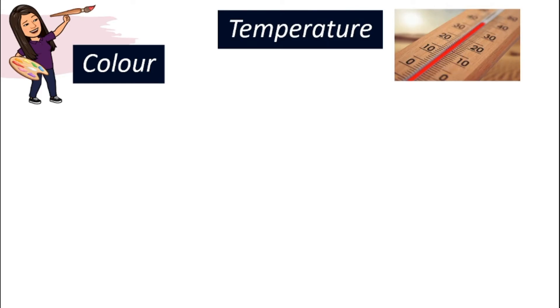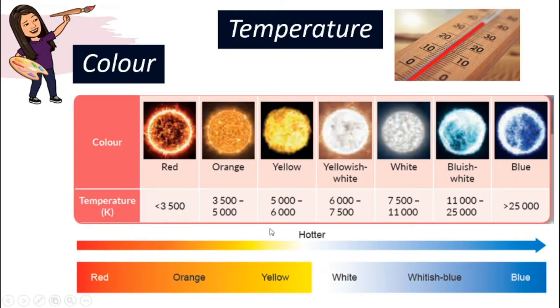The color and the temperature of the star are actually interrelated. As you can see from this table, when the color of a star is towards red, it is actually of lower temperature compared to a star that is blue. So the hotter the star is, the more blue color you will see on that star.